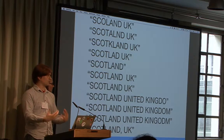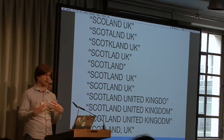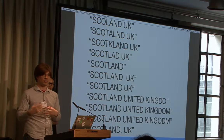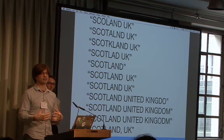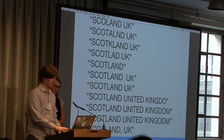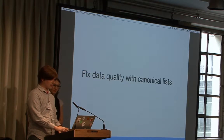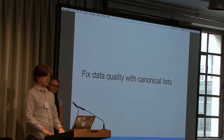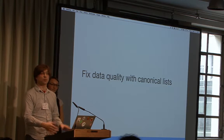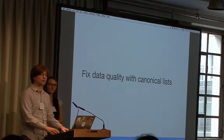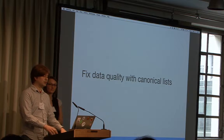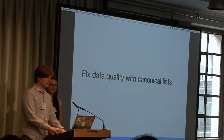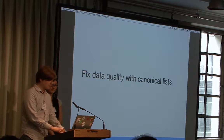A lot of what the Government Digital Service does is around building digital services, so good data and clean data matters to us. If we want to fix this, we need to decide what form is correct. To do that, we need a canonical list of valid names. So let's try to find one.